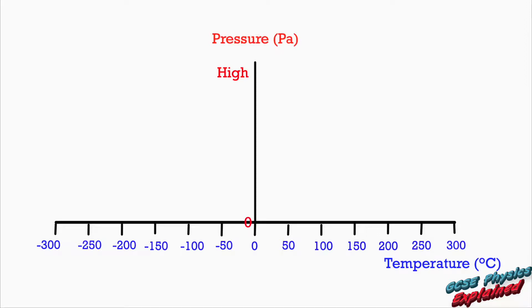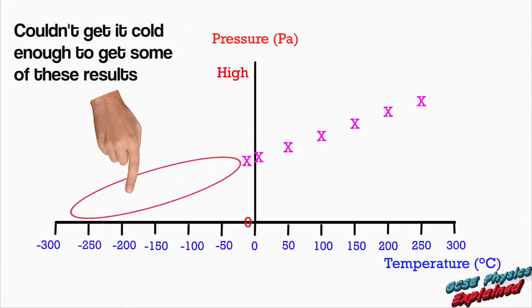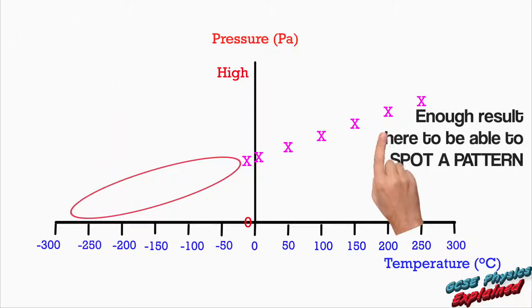So Kelvin did an experiment and started plotting a graph of his results. He increased the temperature at first, making the gas hotter and hotter, then he started to get a few more results by making the gas colder and colder. But he was limited by how many results he could get because this was back in the olden days and he only had so much technology available.